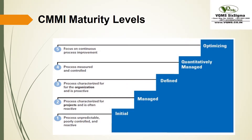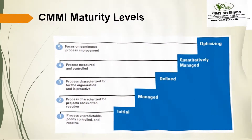CMMI Maturity Levels: 1. Initial — process is unpredictable, poor, uncontrolled and reactive. 2. Managed — process is characterized for the project and is often reactive. 3. Defined — process characterized for the organization and is proactive. 4. Quantitatively Managed — process is measured and controlled. 5. Optimizing — focus on continuous process improvement.